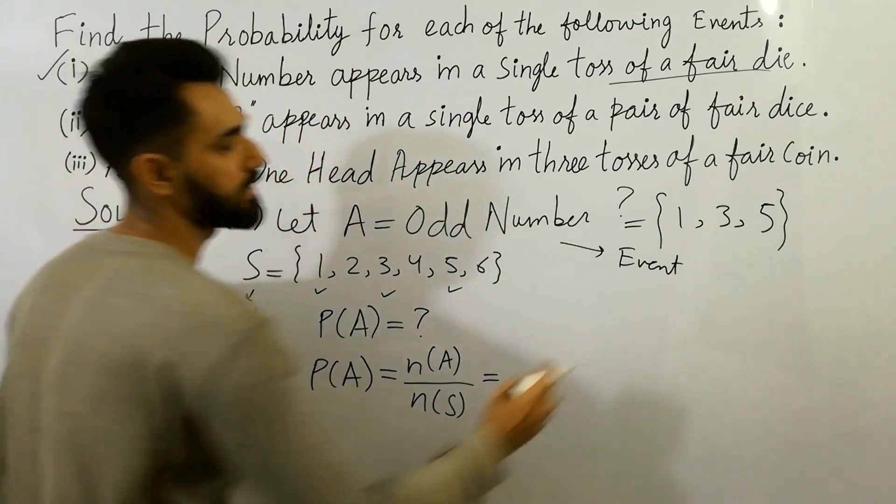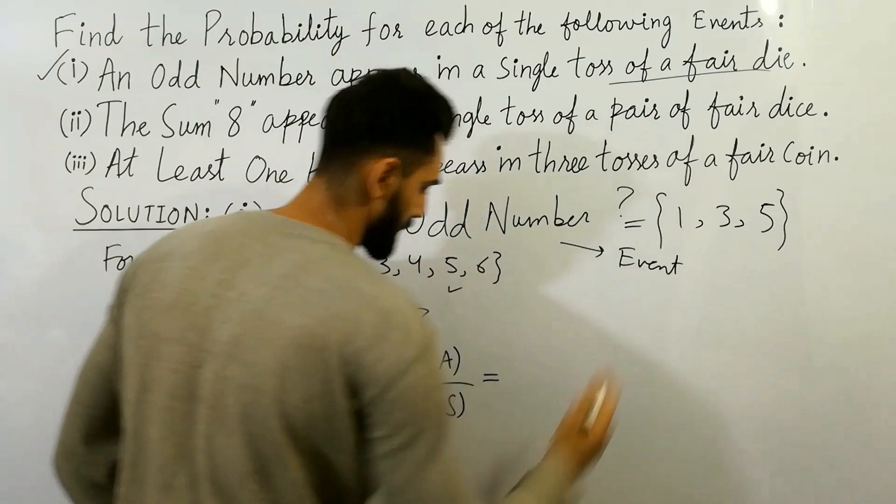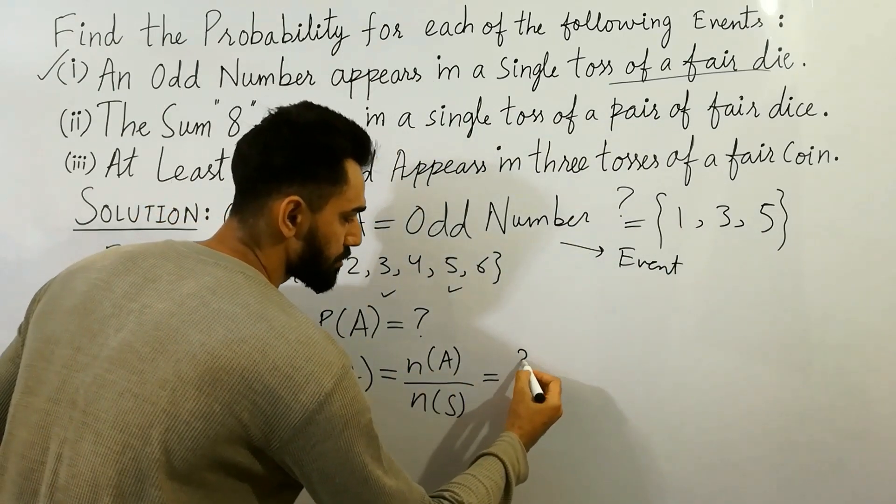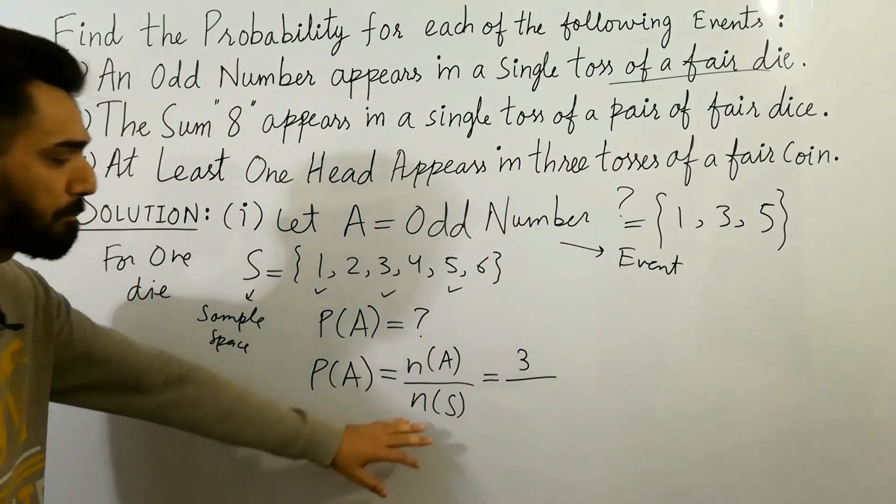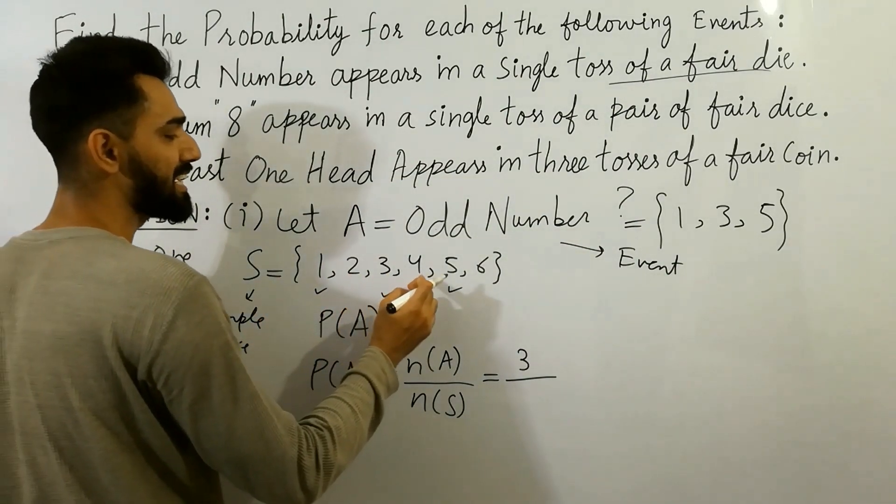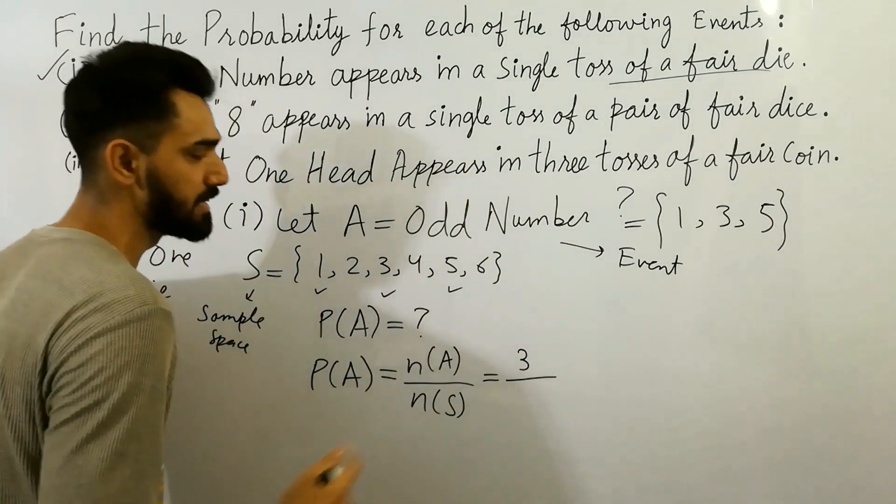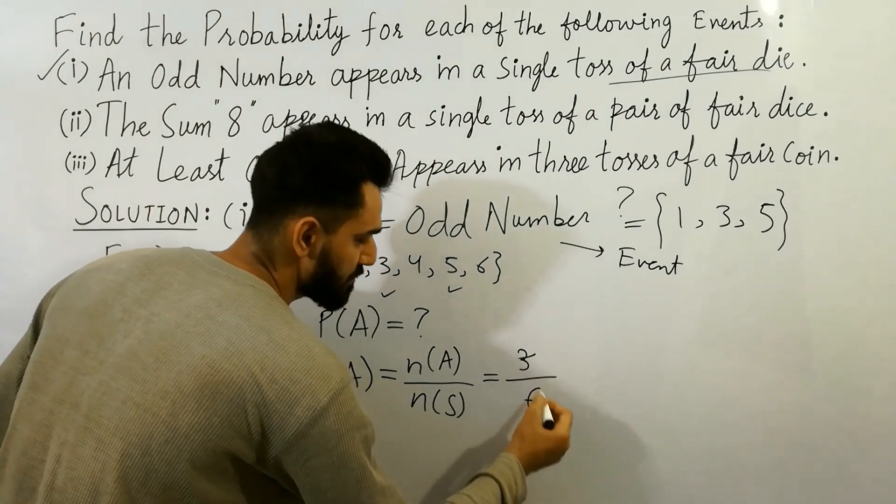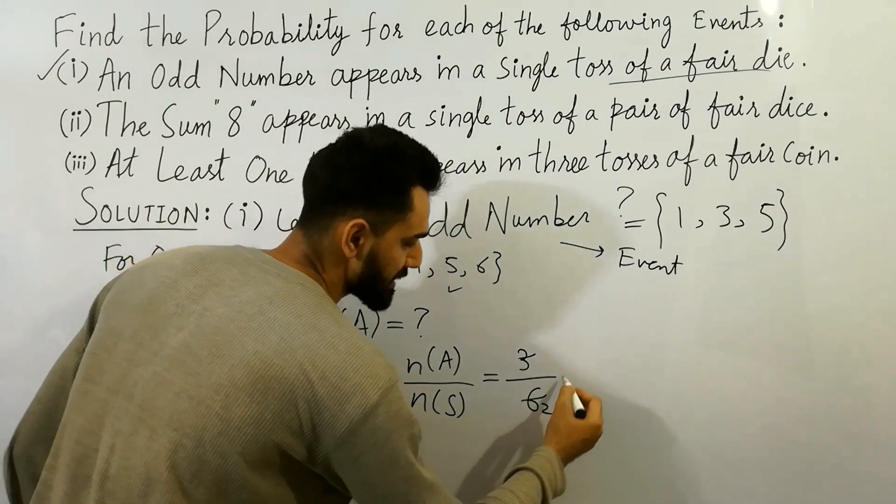So here, you can count out that, one, two, three. So number in A are three, divided by number in sample space. These are one, two, three, four, five, six. There are six numbers total, three divided by six.